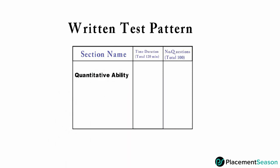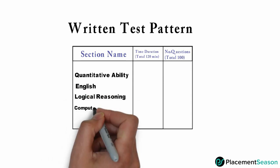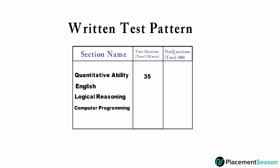Sections will be quantitative ability, English, logical reasoning, and computer programming. Quantitative ability and logical reasoning sections will have 25 questions and 35 minutes each. The other sections will have 25 questions for 25 minutes.